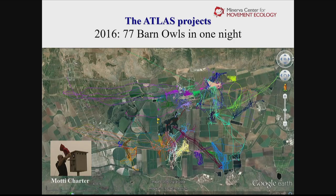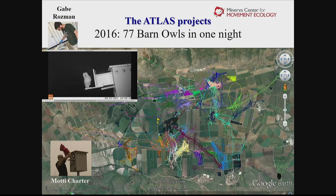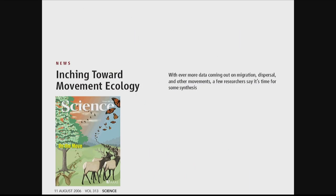Tracking all barn owls in the Hula Valley for several months during the breeding season with high-quality data led to numerous discoveries. For example, barn owl fledglings tend to visit other nests and be fed by other parents — this was not known or reported, and certainly not at that scale. All nest boxes of barn owls in the Hula Valley are visited by other fledglings. This could be an explanation for selection for early laying, since your fledglings hatch earlier and other parents take care of them.